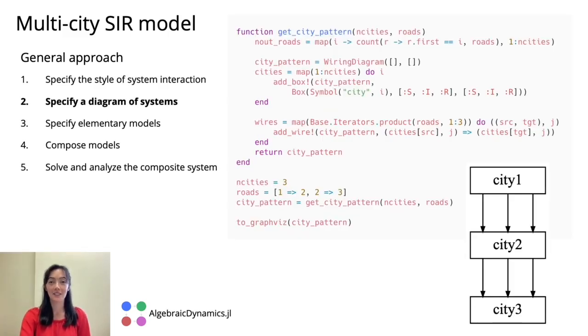Now that we've chosen our style of interaction, our next step is to specify a diagram of systems, or how do we want to compose our primitive model.